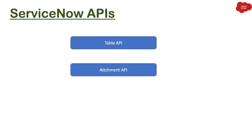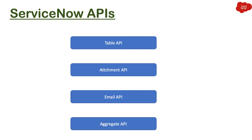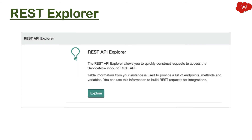We also have the Attachment API, which you can use if you want to upload or query any attachment. Then there is the Email API for sending or receiving email messages. And we have the Aggregate API if you just want to count the number of records in a particular table. ServiceNow comes with many more APIs for different functionalities.